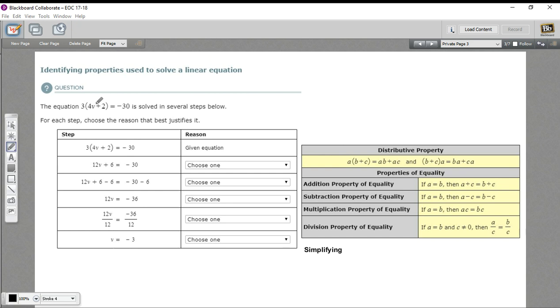All of those steps have names, fancy names, the addition property of equality, the distributive property, multiplication or division property of equality, and then I've added simplifying down here because there are some steps where you're not really applying a property, you're just simplifying.